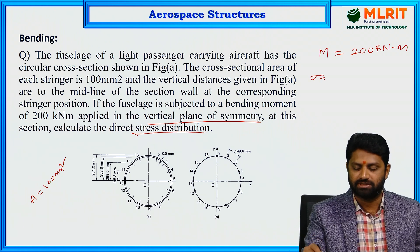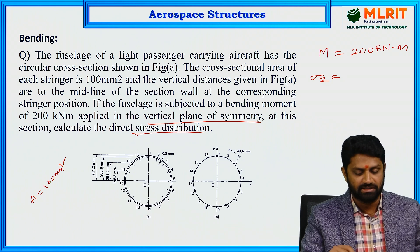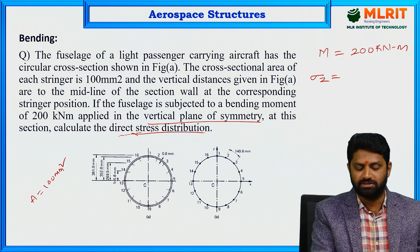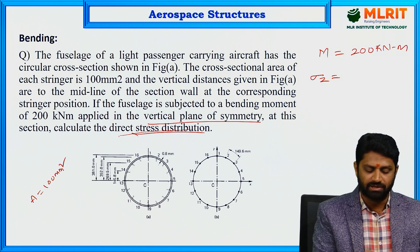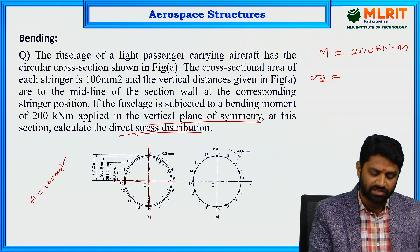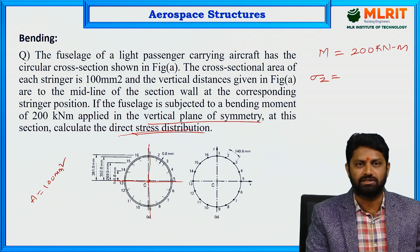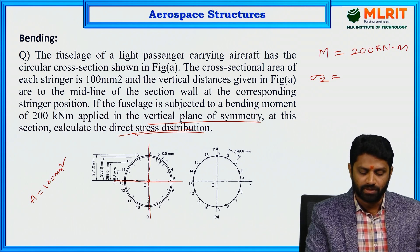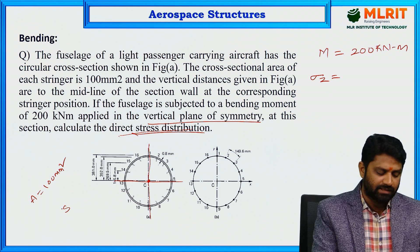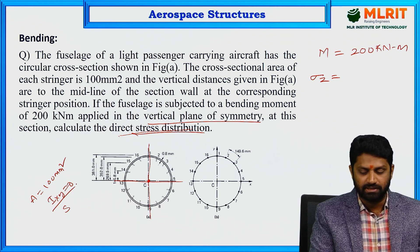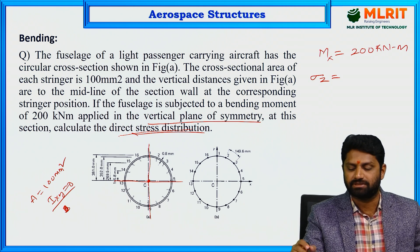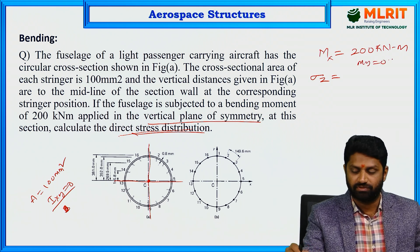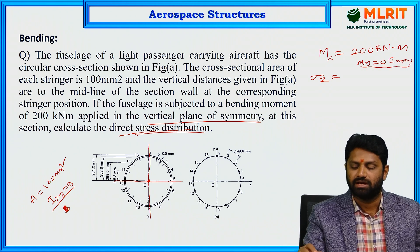The formula for direct stress distribution: since this is a fuselage cross section which is doubly symmetric — symmetrical about the horizontal axis as well as the vertical axis — the shear centre lies at the junction of these centroidal axes. Therefore, because of symmetry, the product of inertia IXY equals zero. The bending moment is applied in a vertical plane, so it is given as MX and MY equals zero. The direct stress distribution formula therefore reduces to σz = MX / IXX × Y.